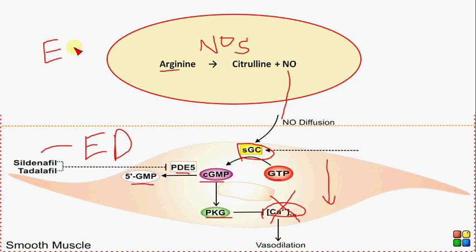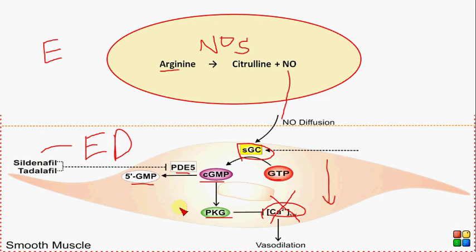To summarize: nitric oxide was synthesized in the endothelial cell, diffused into the vascular smooth muscle, and activated guanylyl cyclase, leading to formation of cyclic GMP. Cyclic GMP activated protein kinase G, which inhibited calcium channels, decreased calcium levels, and caused vasodilation. Cyclic GMP is degraded by phosphodiesterase into 5'-GMP, inhibiting the stimulatory effects of cyclic GMP. That was the nitric oxide signaling pathway.